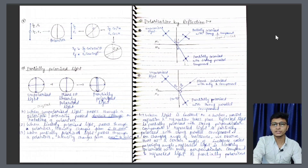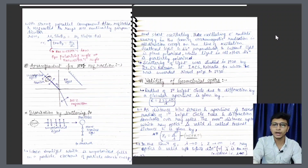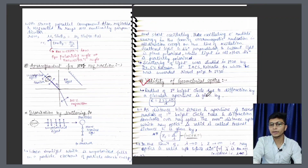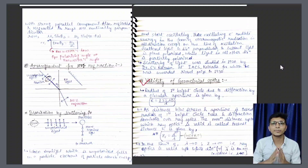Ab polarization by reflection — yahan par aap dekh sakte hain. Aur aage polarization by scattering — yeh kuch kam poochha jata hai, par phir bhi aapko padhna hai. Validity kab tak hota hai — yeh cheez aap ek baar read karna. Intensity mein diya hua hai. Filhaal yahi cheez hai is chapter mein — jo overall maine aapko bataya hai, ek brief idea diya hai. Aap notes ka link — PDF aapko description mein milega.